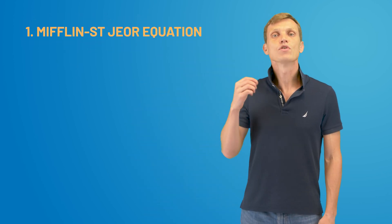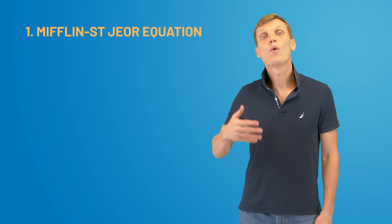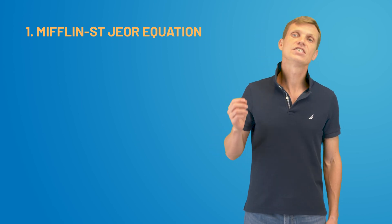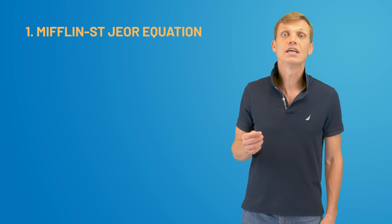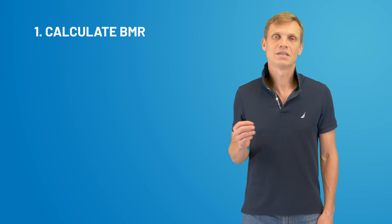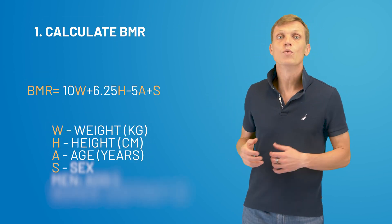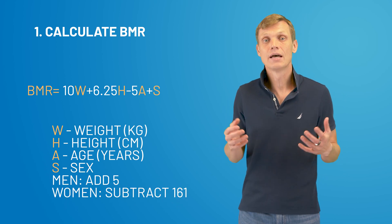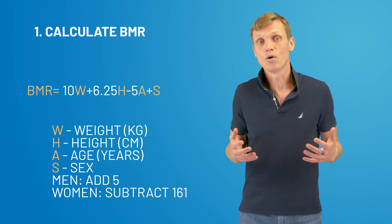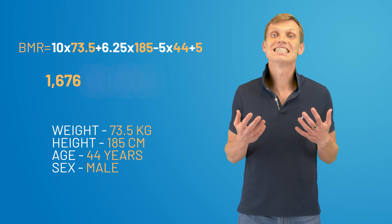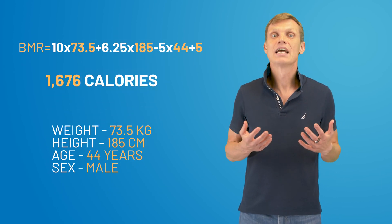Fact number one. The most famous and widely used formula for determining daily calorie consumption is the Mifflin-St Jeor equation. It employs a two-step calculation process. Step 1: calculate your basal metabolic rate, or BMR, using this formula, which represents how many calories you need by basically not doing anything at all during the day. For example, my BMR is 1,676 calories a day.